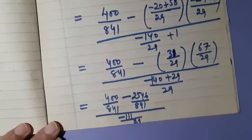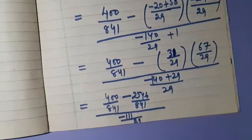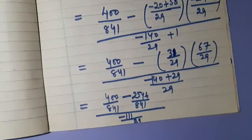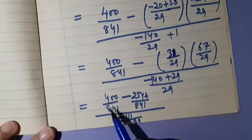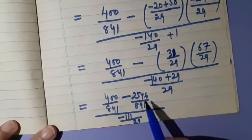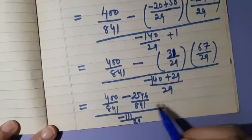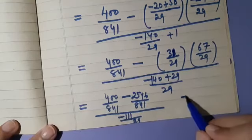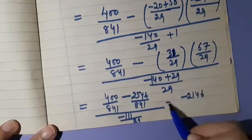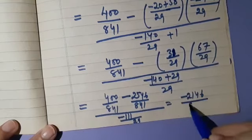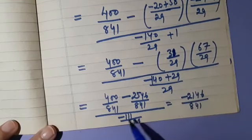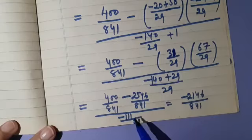Simplifying further: in the numerator 400 minus 2546 gives minus 2146, divided by 841. We are dividing by minus 111 upon 29, so we reverse it to get 29 upon 841 multiplied appropriately.